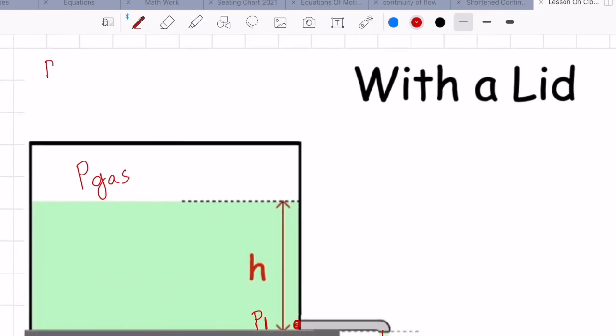Now when we write pressure 1, just like last time, it's fluid density, gravity, height. But now we add to that the gas pressure pushing down on the fluid. It's not atmospheric pressure anymore. Pressure 2 at the outlet of the faucet is still atmospheric pressure.